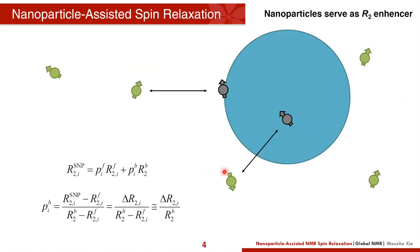In this particular study, we used a nanoparticle as an R2 enhancer, similar to the idea of an EPR-type experiment. We have a paramagnetic species that serves as an R2 enhancer — it basically enhances the R2 relaxation. Based on this, you can get distance information, or you can find the dynamics of a protein, allowing us to study these systems better.